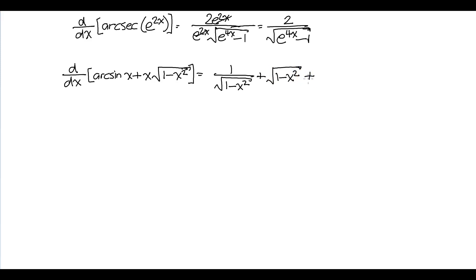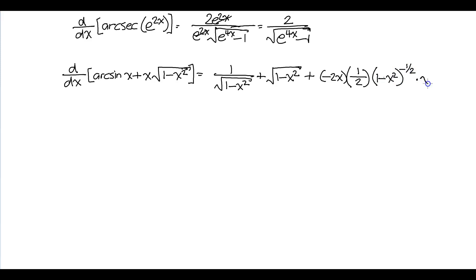What's g prime? We can just use the chain rule for this one. It will be negative 2x times 1 half times 1 minus x squared to the negative 1 half power, times x — we can't forget that x over there. So after simplification, we get 1 over the square root of 1 minus x squared, and this cancels.